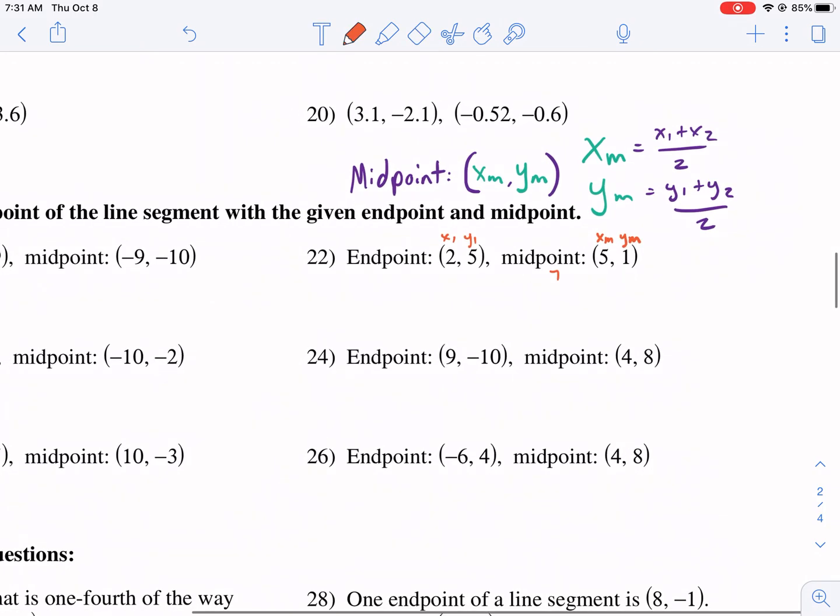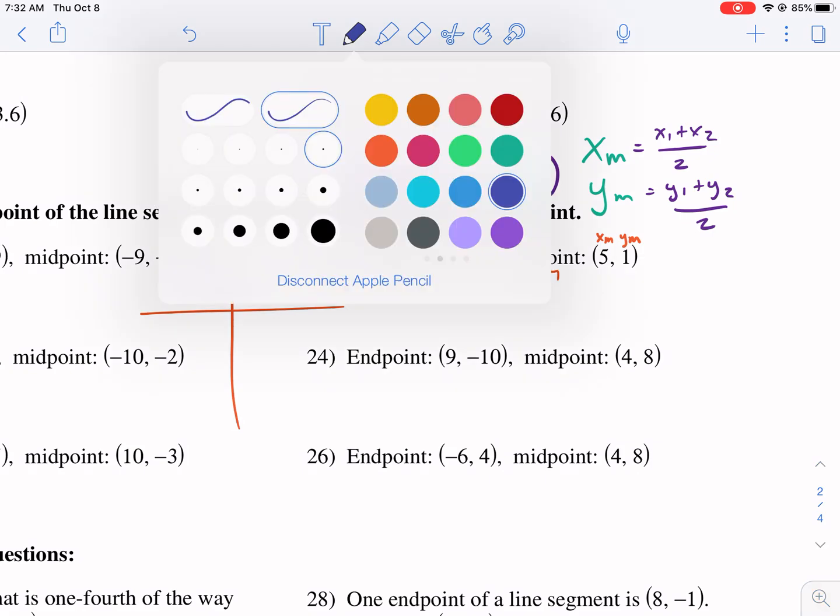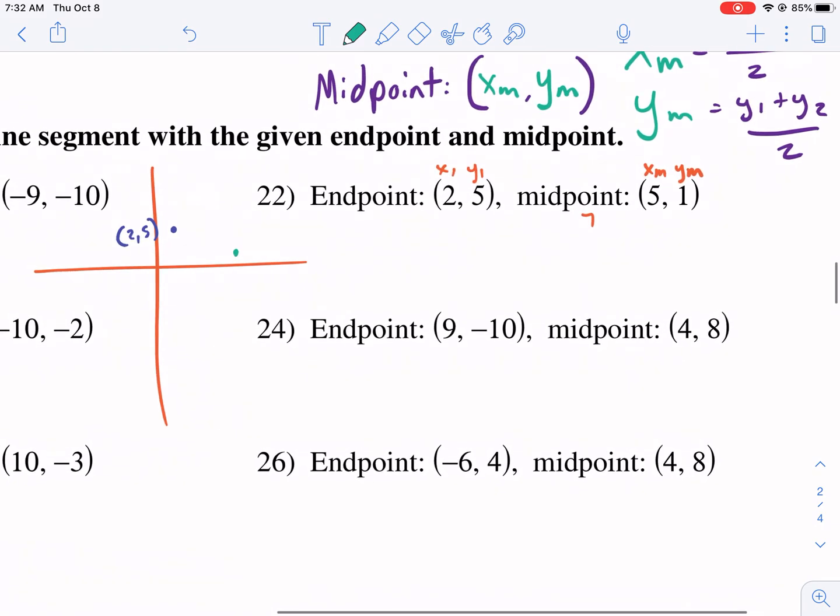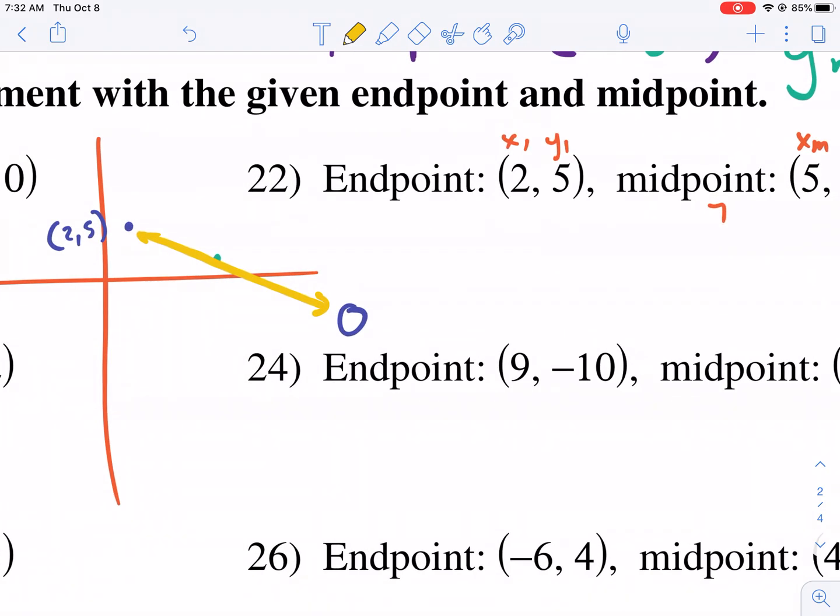So if I were to draw this real quick, just so you get an indication. So we have two, five is one endpoint. The midpoint is five comma one. And then we know that there's another endpoint somewhere around here, because this is a line that continues something like this. So we don't know exactly where it is, but this is a line with this as an endpoint, with the green as a midpoint, and we're trying to find the other endpoint.